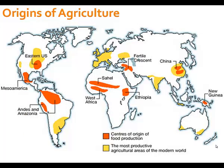Here's a map of some of the earliest places where agriculture or farming took place. Over the next couple of weeks, we're going to talk about a couple of these places in more detail — like the Fertile Crescent, China, and Egypt, just to name a few.